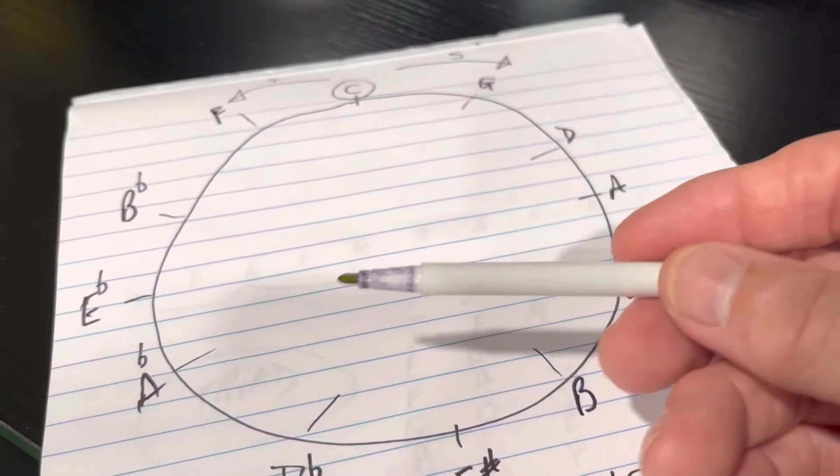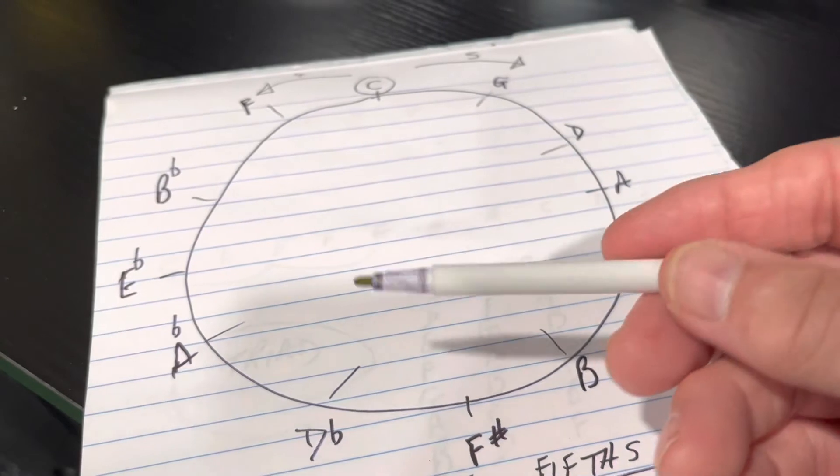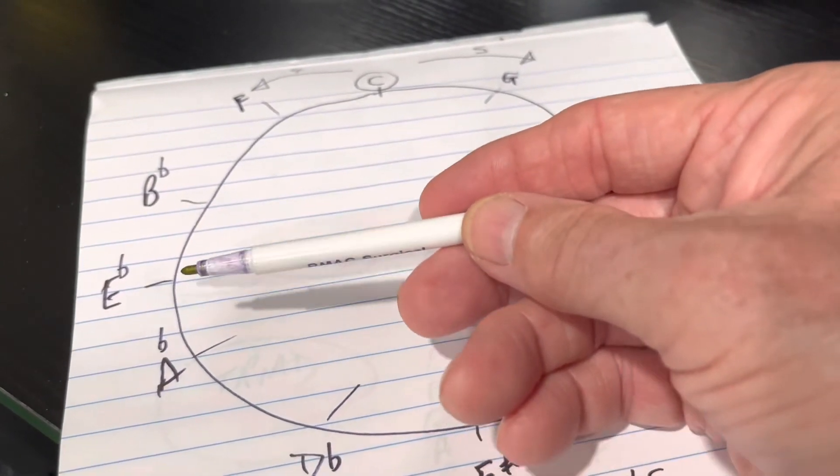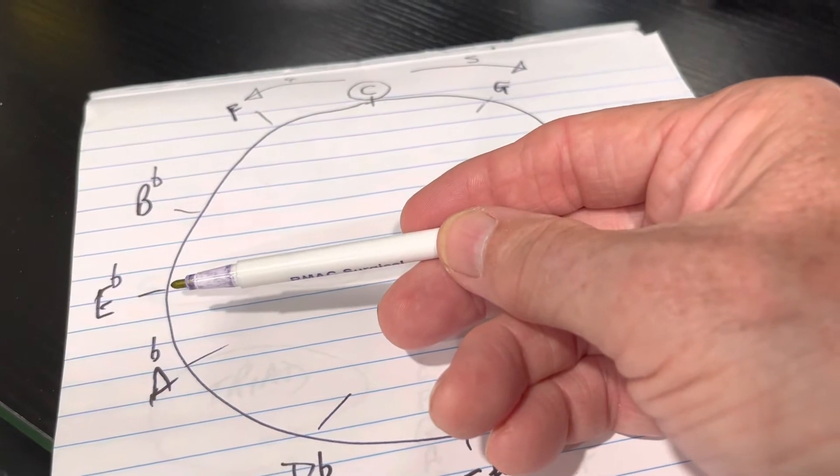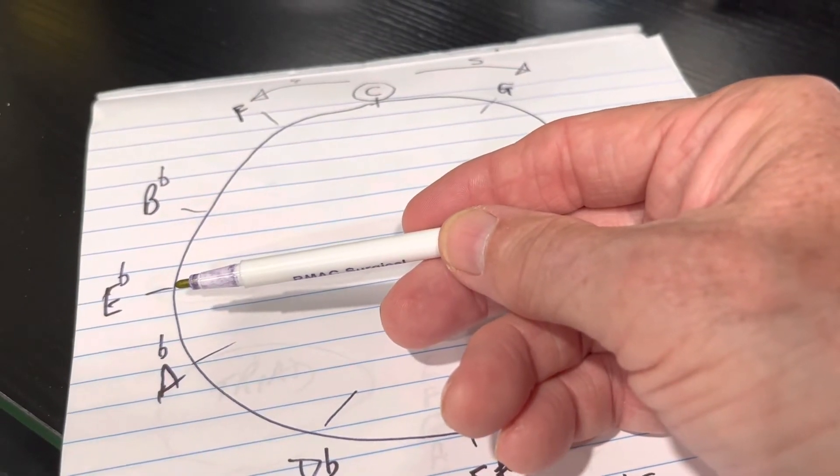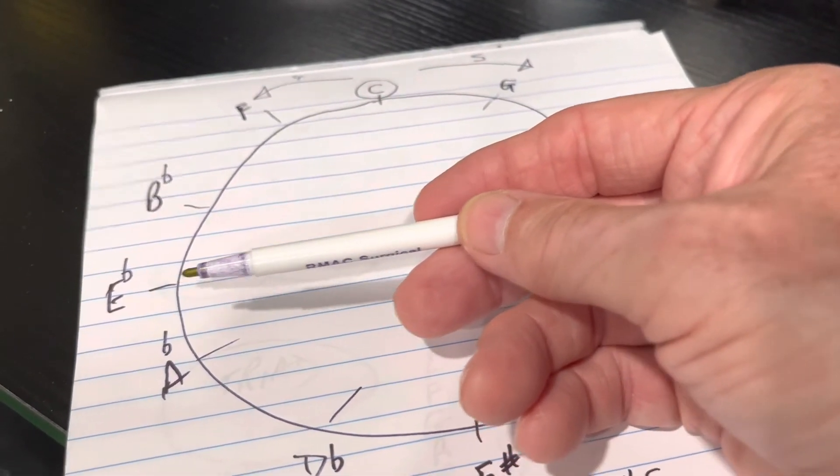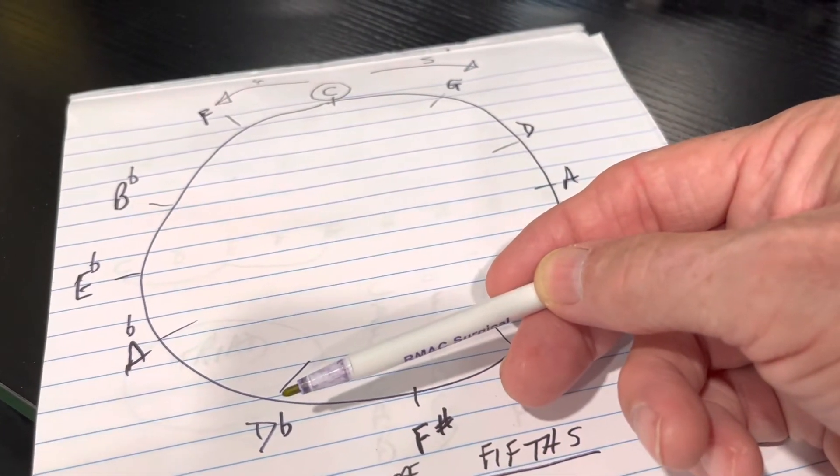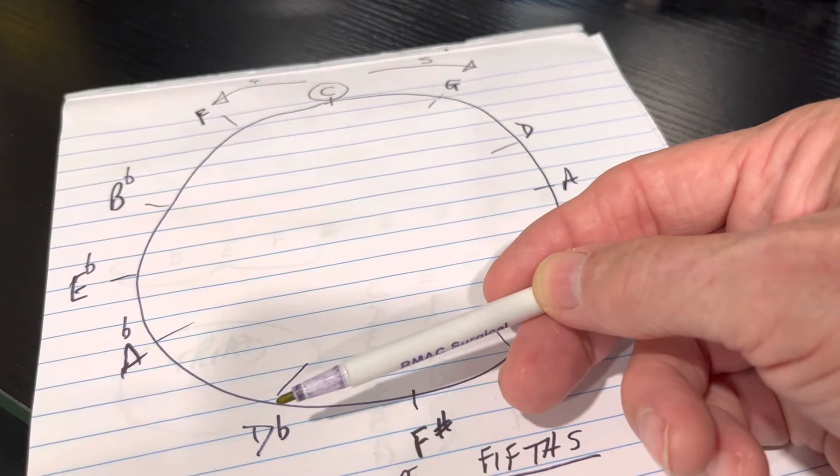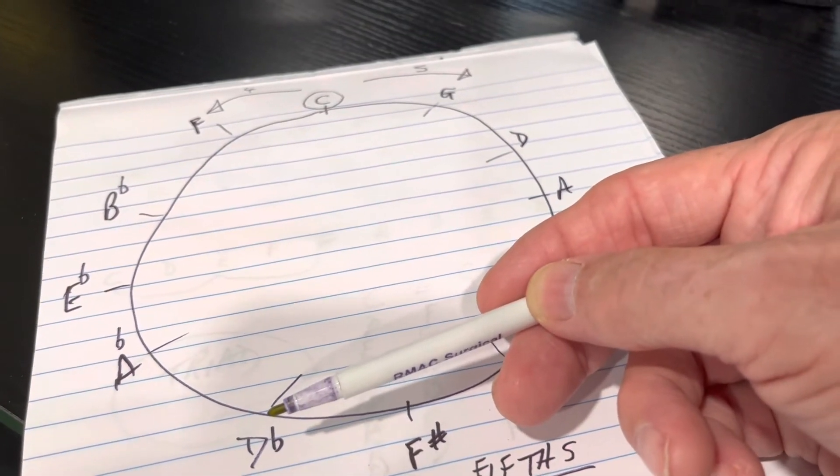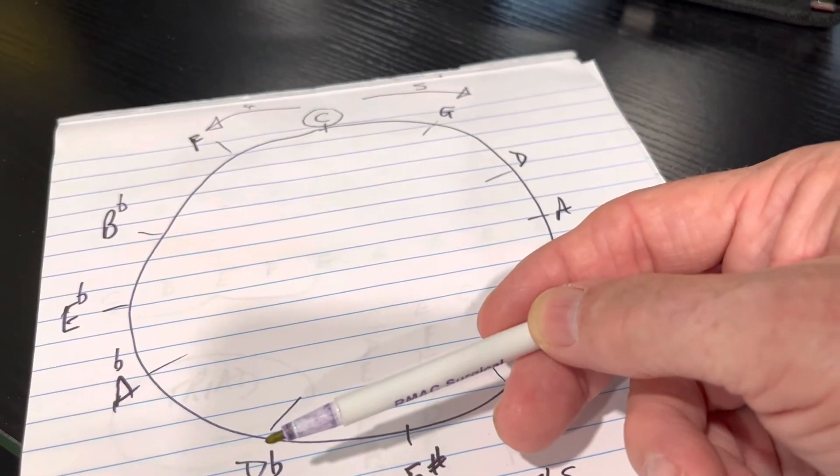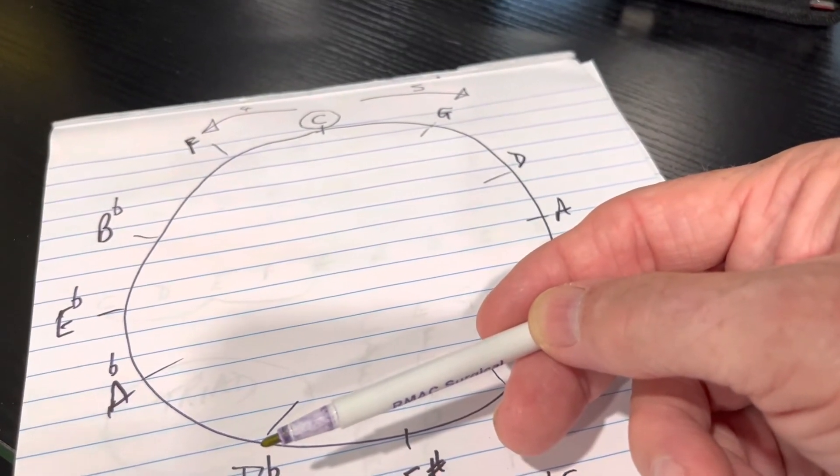Even if we get onto this side, let's say that we're going to look at the key of A flat. One step this way means that we know that E flat major is a chord in that key, and one step this way means that we know that D flat major is a chord in that key. This is very helpful to point out what the relevant major chords in the key might be.